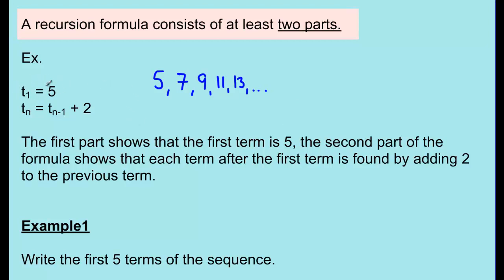If I didn't have T1 equals 5 and only had the general term Tn equals Tn minus 1 plus 2, I could start at any number — say 35 — giving 37, 39, and so on. That's not the same sequence as 5, 7, 9, 11, 13, because it doesn't contain the numbers before 35. So it's very important to write what the first term is, along with the general term. In some examples you'll also need to include the first couple of terms.